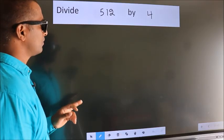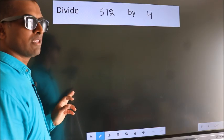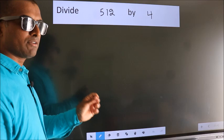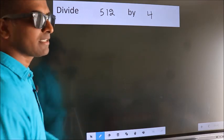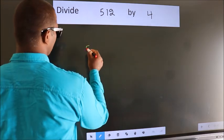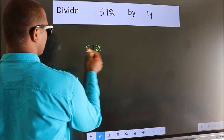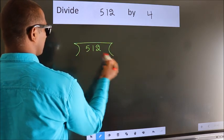Divide 512 by 4. To do this division, we should frame it in this way. 512 here, 4 here.